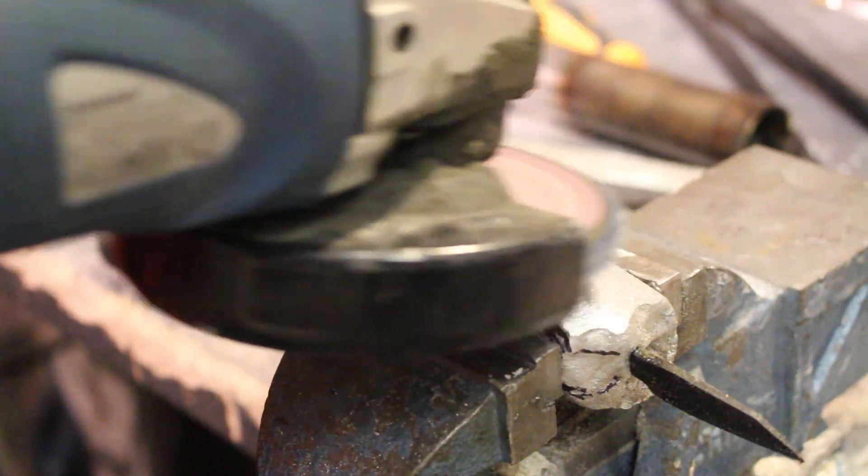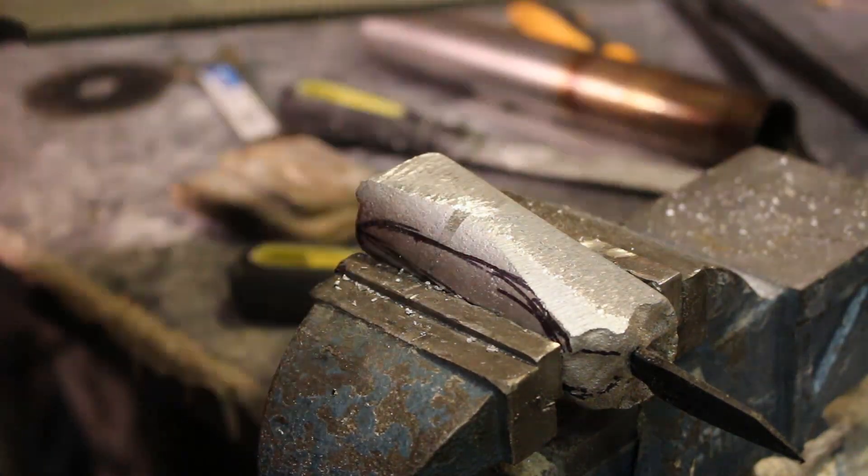I tried using an angle grinder with an abrasive flap disc to remove some of the metal but I found that it generated much too much heat and didn't really remove much material.